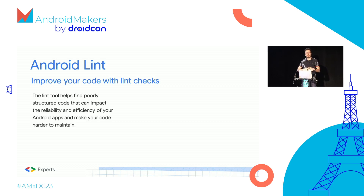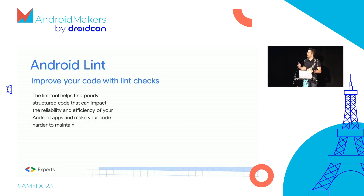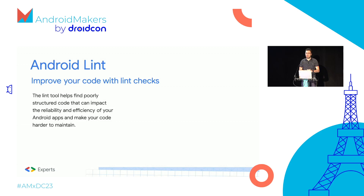If you'd like to do static code analysis including Android resources — XMLs, manifests, Gradle, maybe a TOML file — we have the Android Lint library from Google. This is not something new; we have had these tools since the early days of Android.